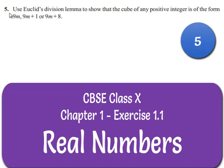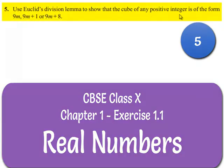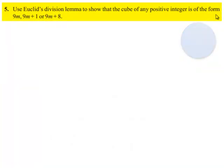Now let us move on to the fifth question. The question is: use Euclid's division lemma to show that the cube of any positive integer is of the form 9m, or 9m plus 1, or 9m plus 8.